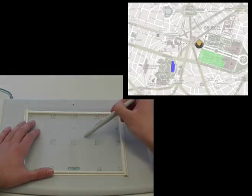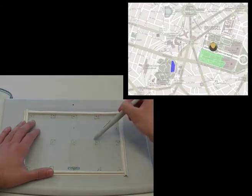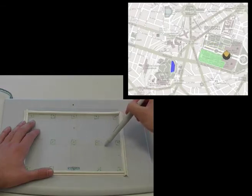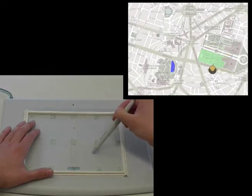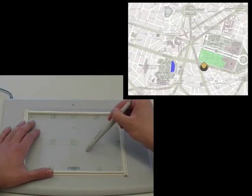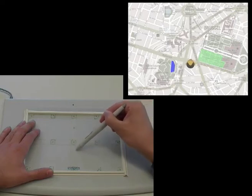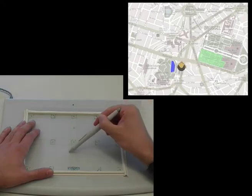Moving the stylus on the tablet accordingly moves the listener on the map. By exploring the map, the user can hear the relations between objects and reconstruct the objects' position and shapes.